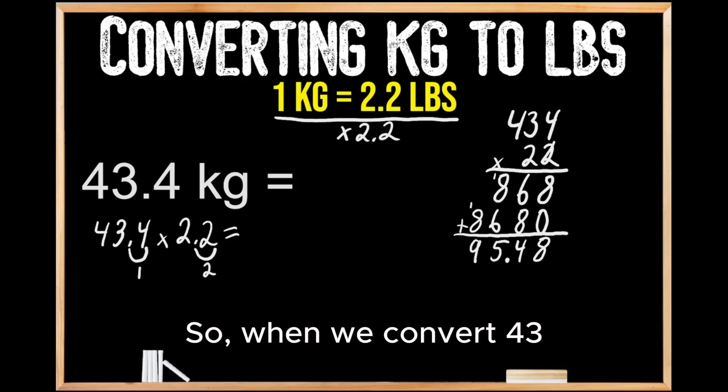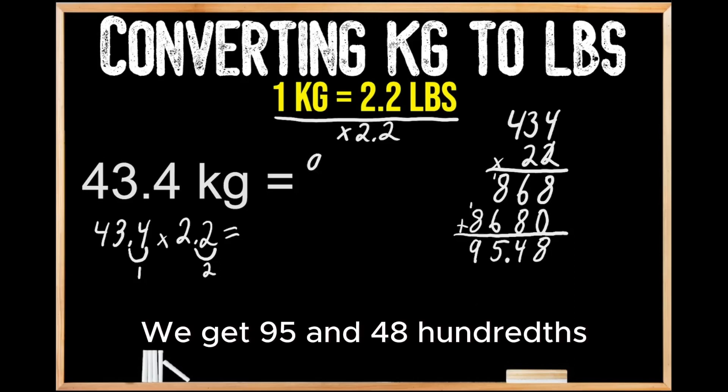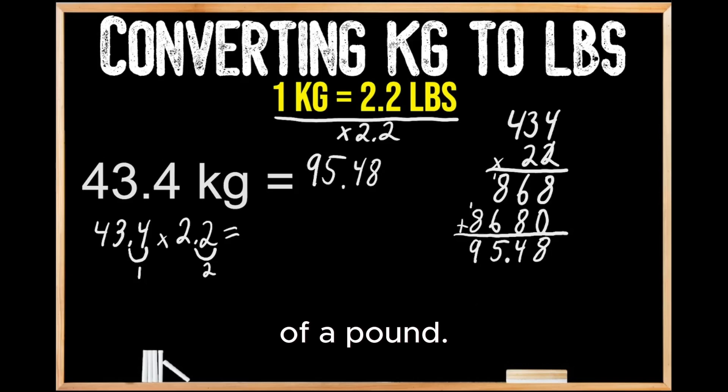So when we convert 43 and 4 tenths of a kilogram into pounds, we get 95 and 48 hundredths of a pound.